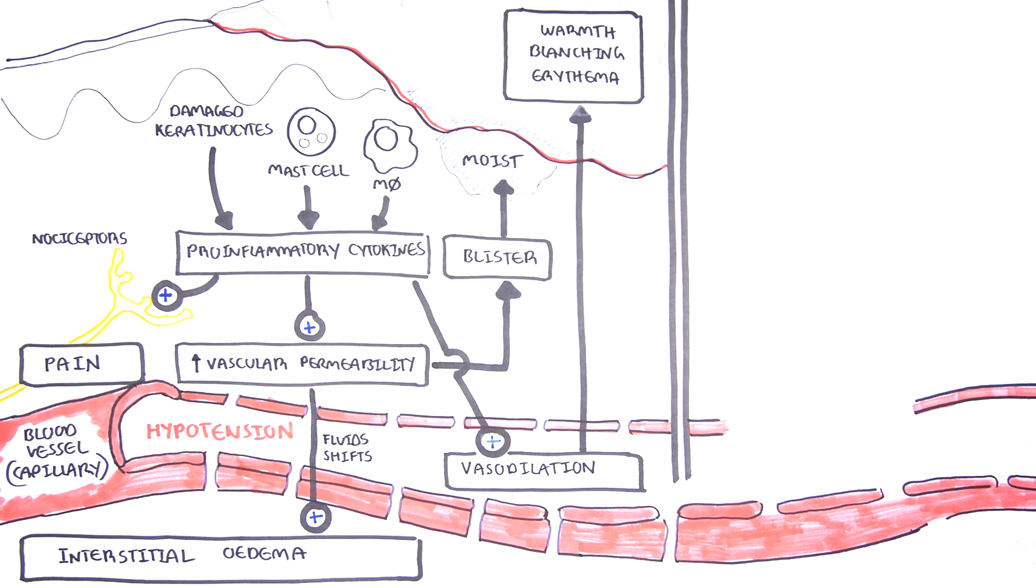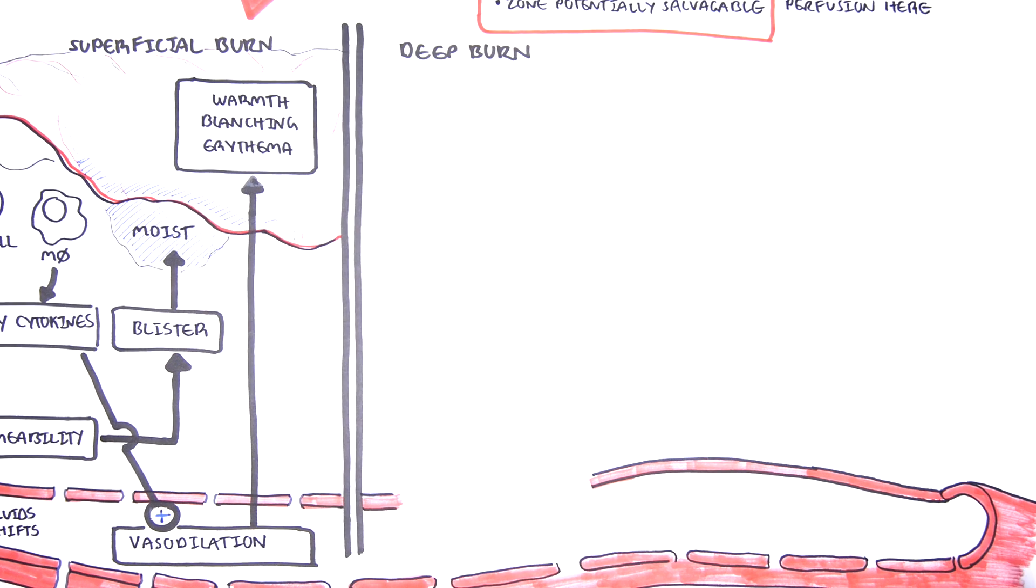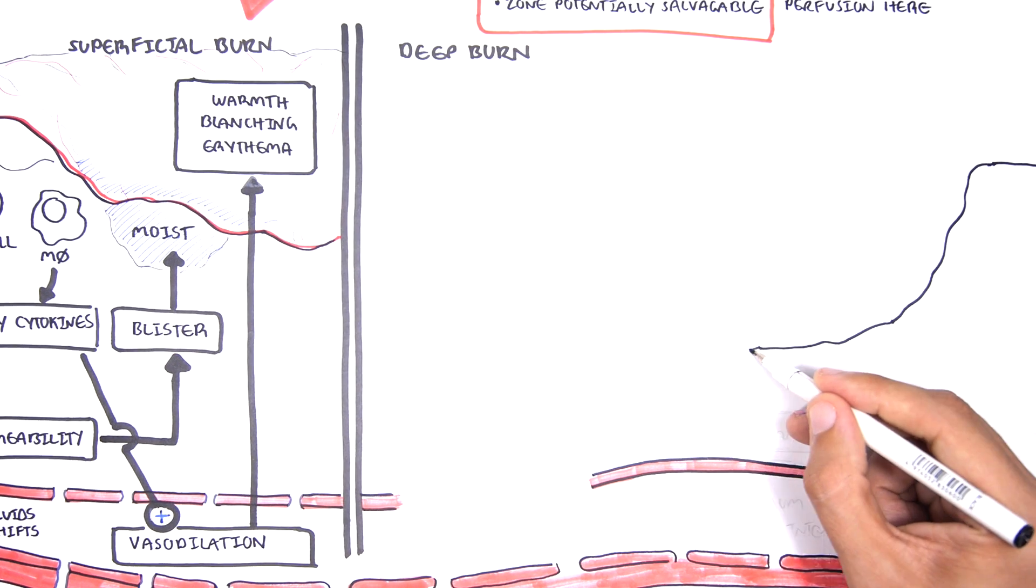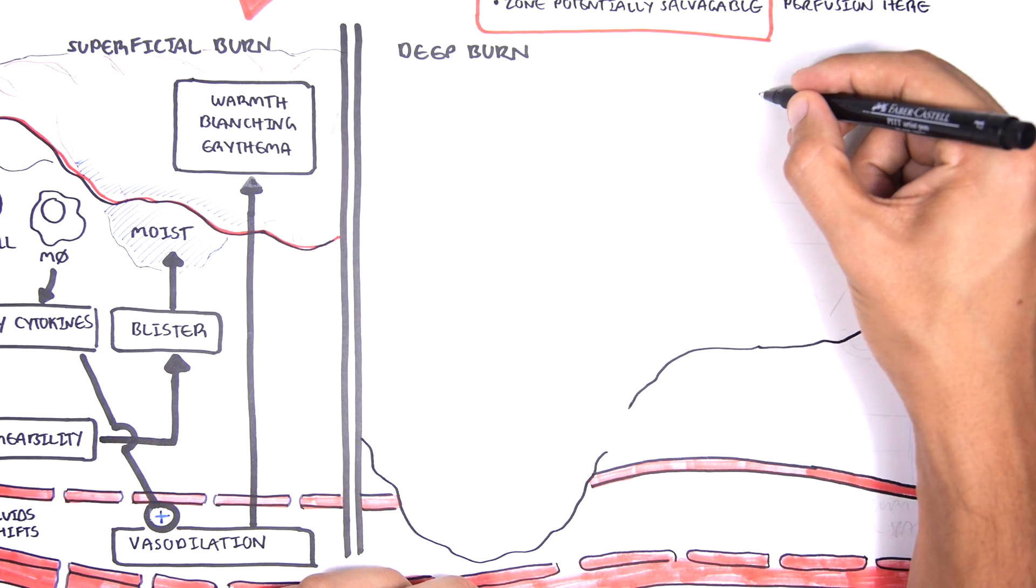In deep burns, you have more than just damage to the epidermis and the upper part of the dermis. You have damage all the way down, extends all the way to the hypodermis, so it's a pretty deep burn.